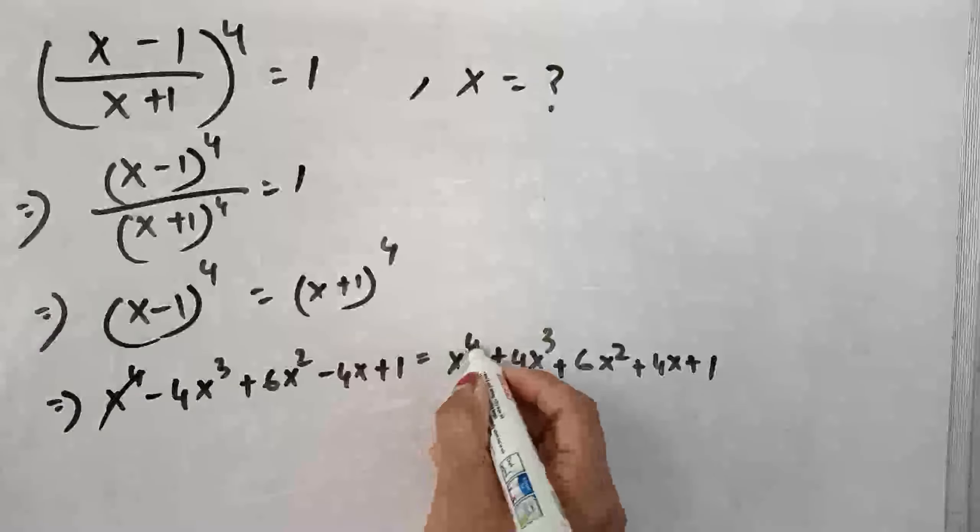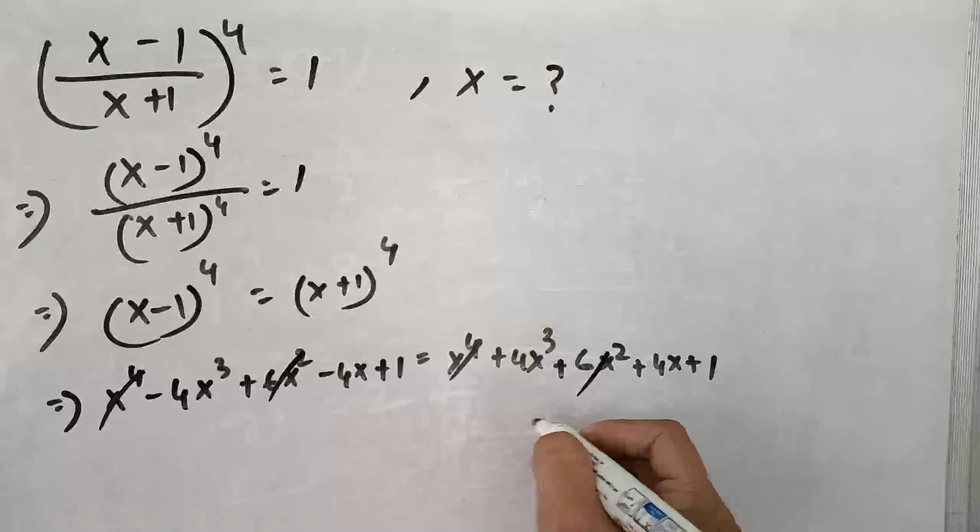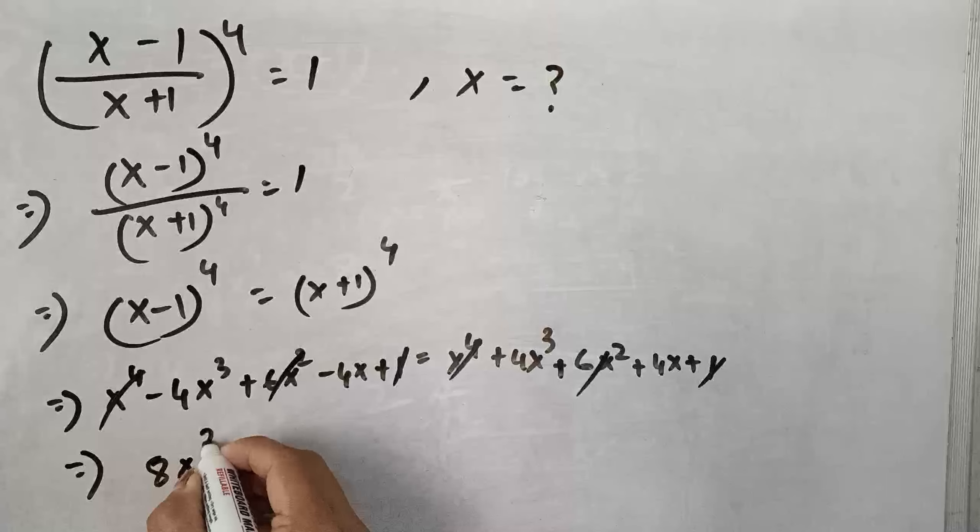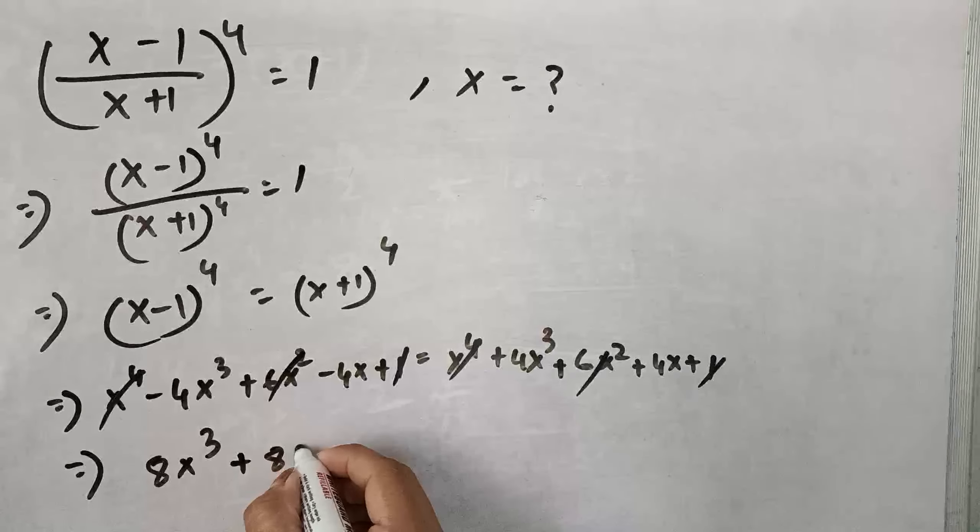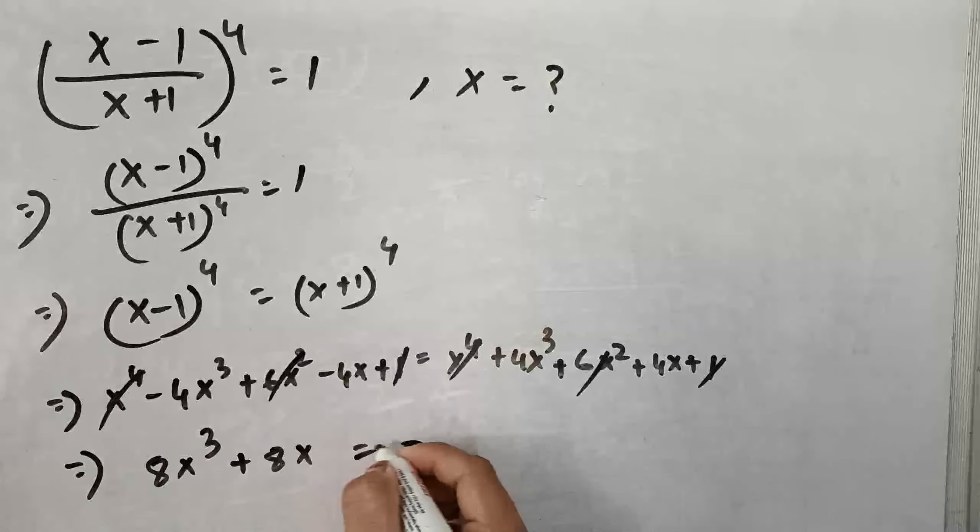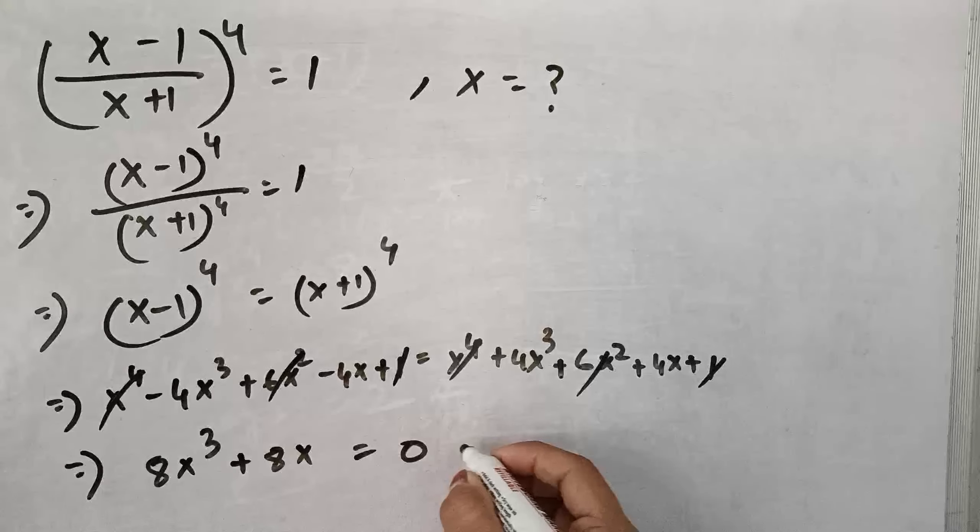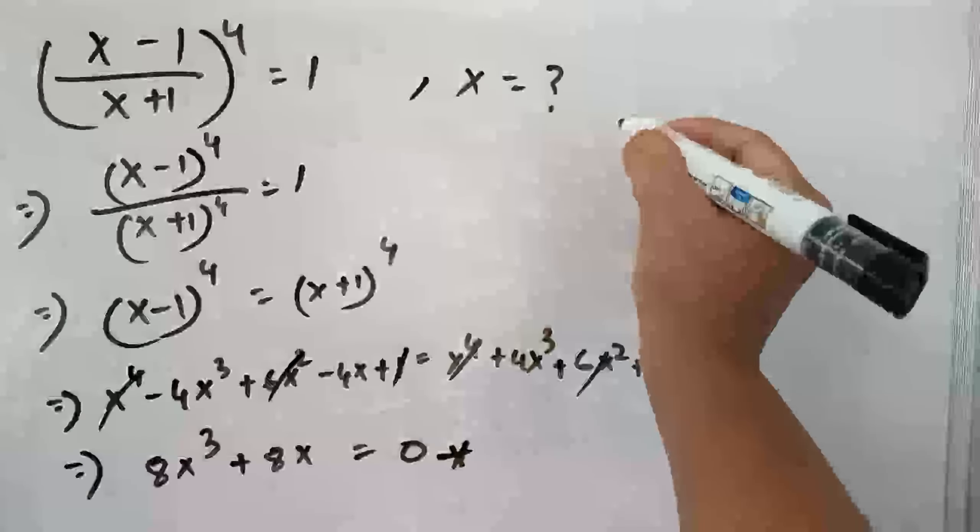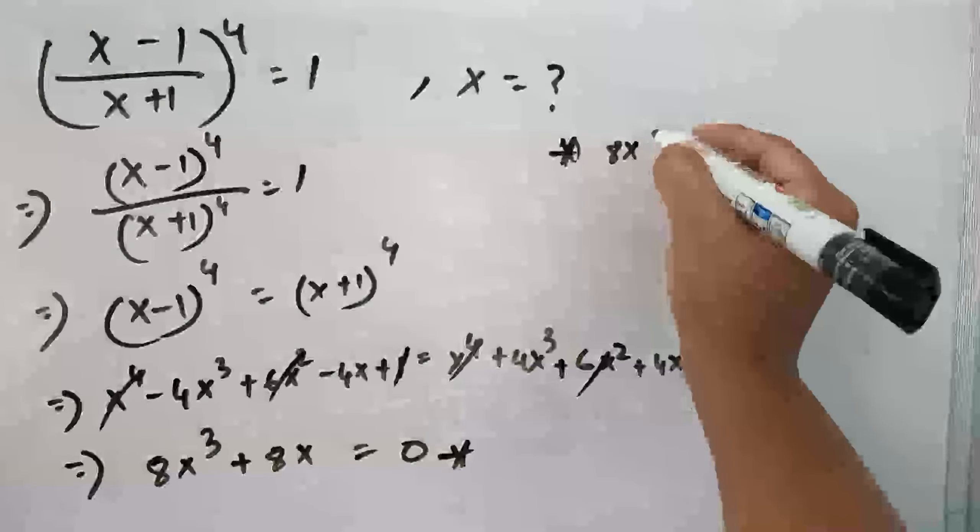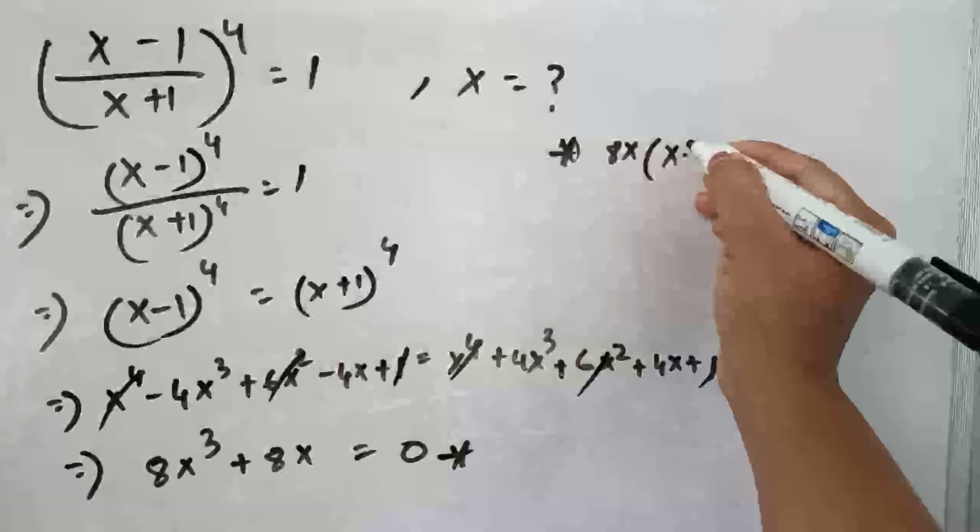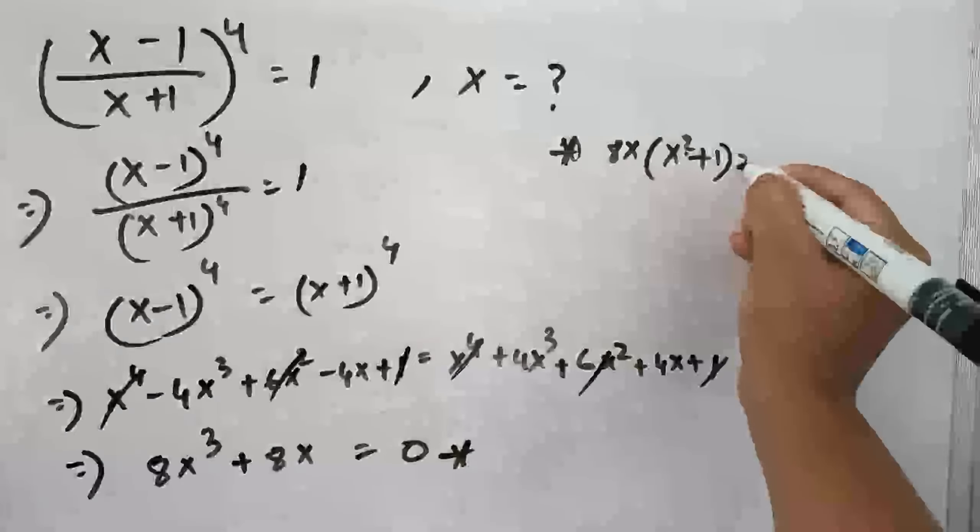So, from here you can easily cut it. From here what we get it's 8 x cube plus 8 x equals to 0 and now take 8 x as common 8 x into x square plus 1 equals to 0.